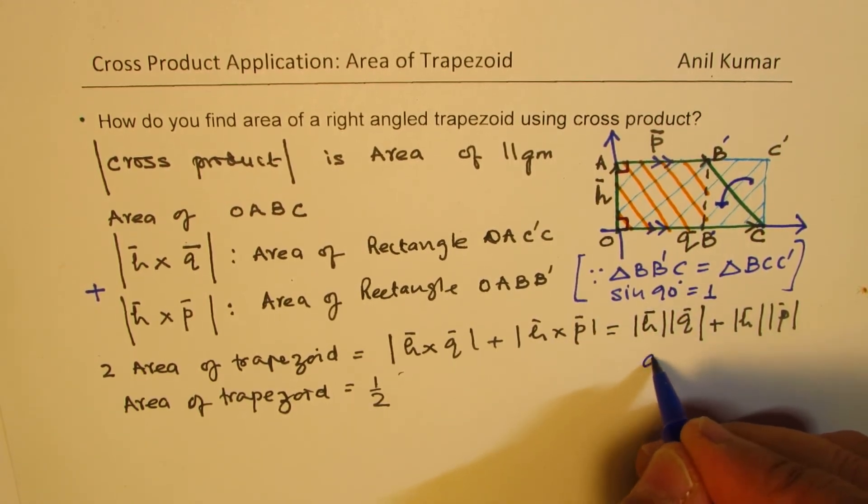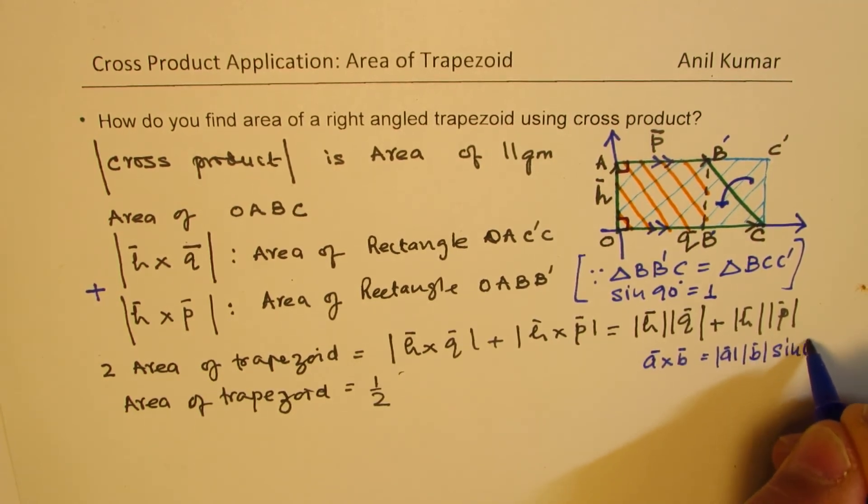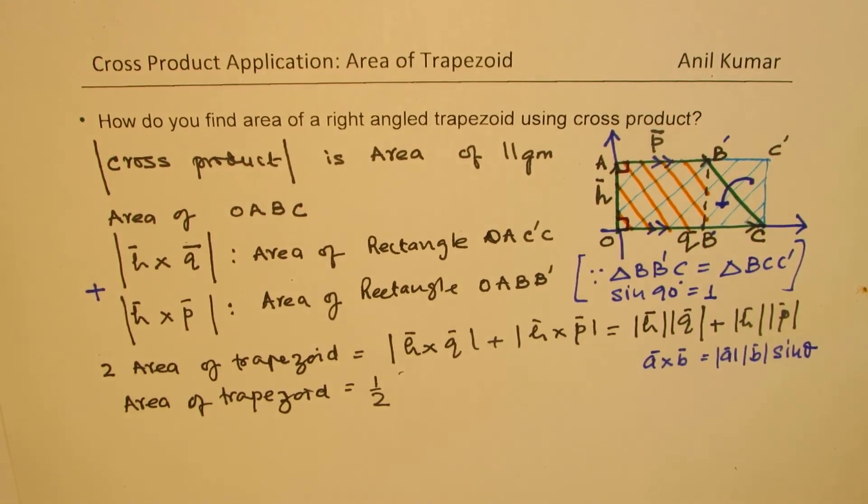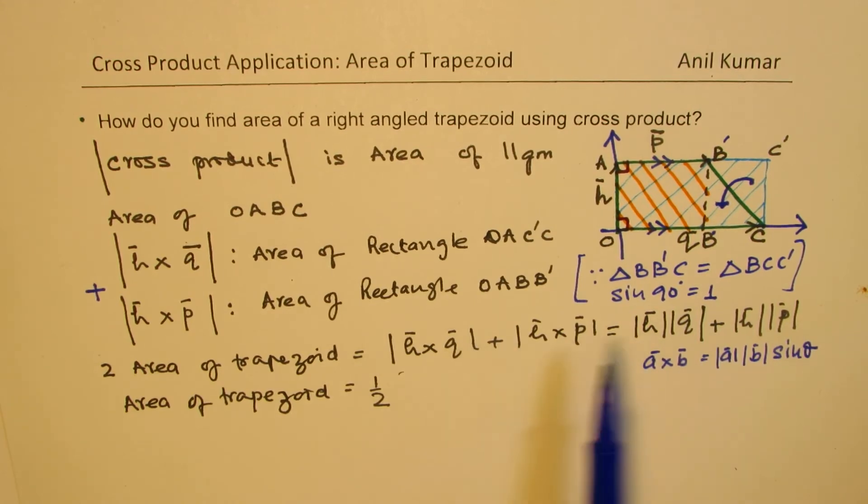And we have written this because A cross B is equal to magnitude of A times magnitude of B times sine of angle between them. In this case, the angle is 90 degrees between H and Q and sine of 90 is 1. So, we get this.